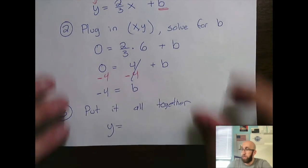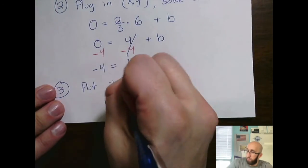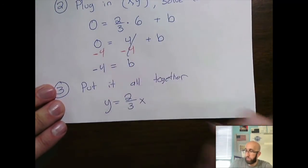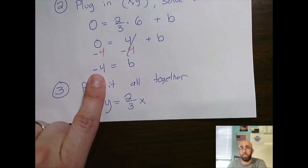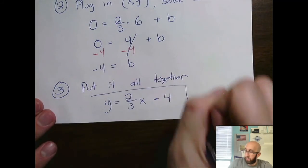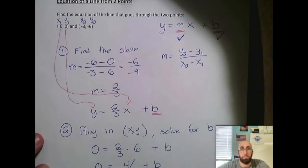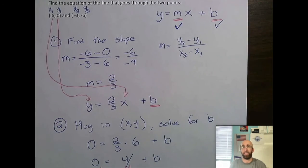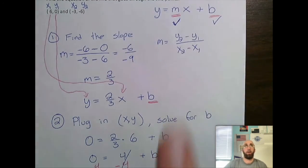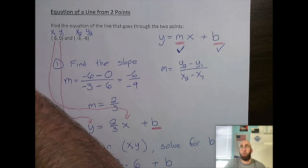So we're going to have y equals. We found earlier that my m was 2 over 3x. And then my b is negative 4. So I'm going to put a minus 4 there. That is my equation of the line through both of these points. Again, it's a little bit of a longer problem. So just break it down step by step. Focus on the m, then focus on the b, and then put it all together. Again, that was write an equation of a line from 2 points.